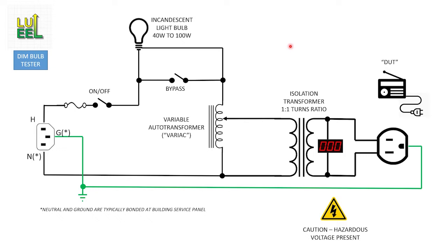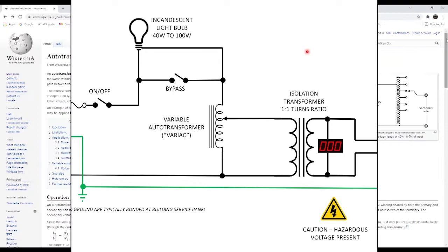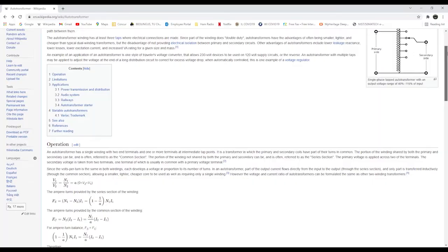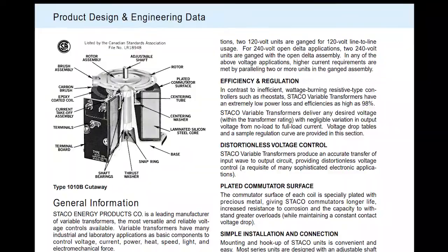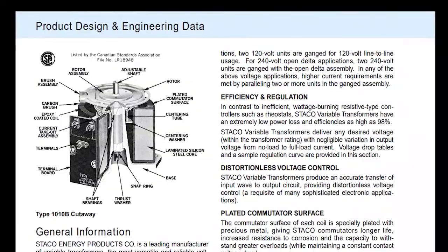Okay so moving on to the Variac. Now the proper technical name for this device is a variable auto transformer but most people just call them a Variac which actually is a trademark that apparently General Radio first started using back in the 1930s but like a lot of trademarks it's become genericized and it's being used as just a generic name for a variable auto transformer.